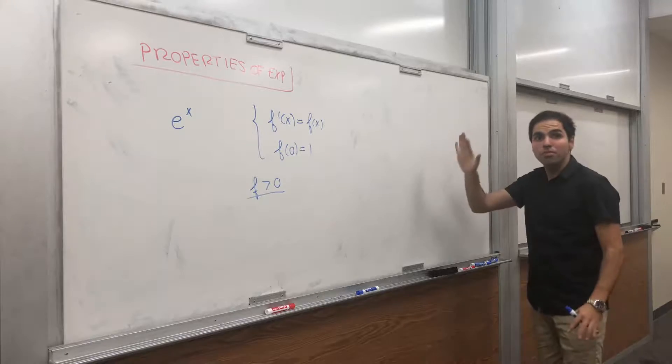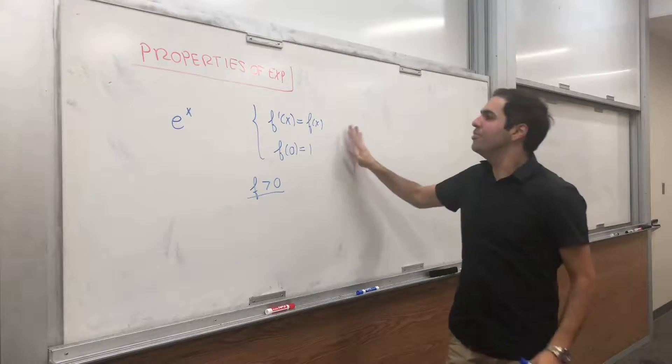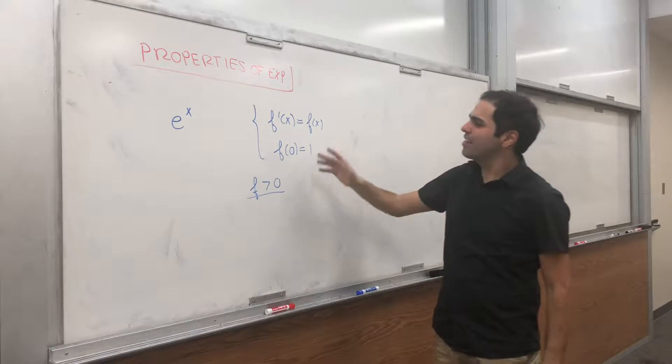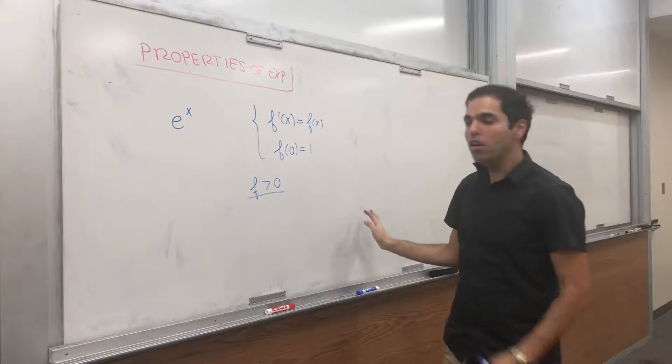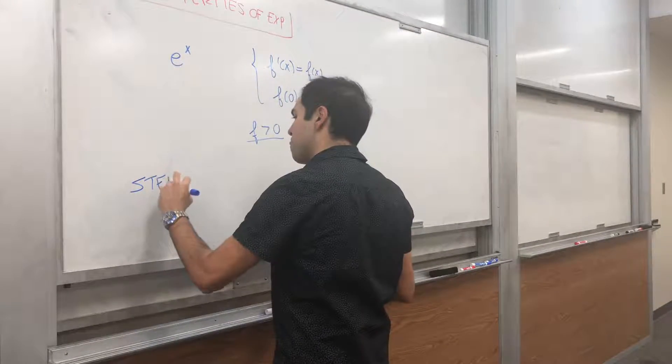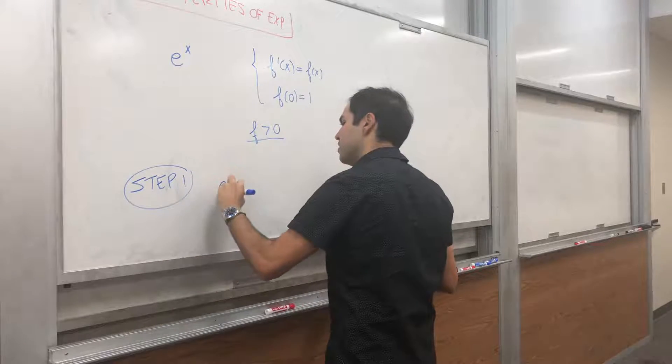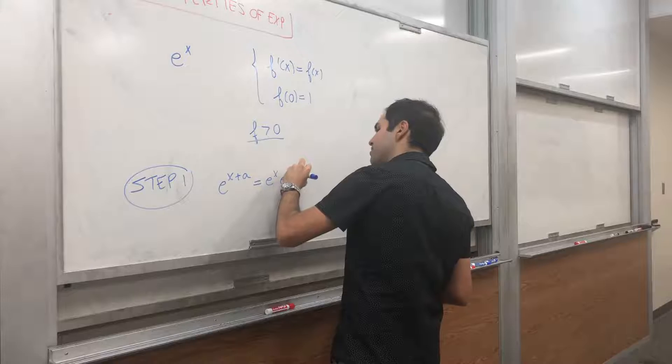Perhaps you can prove it from the differential equation, but right now I don't know how on the spot. But just from those three properties, I want to show, first of all, that e to the x plus a equals to e to the x times e to the a.